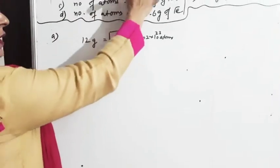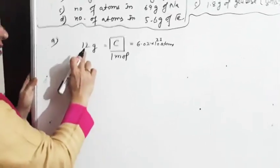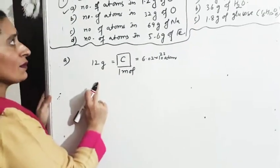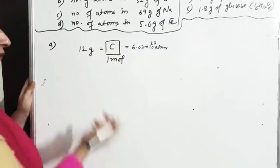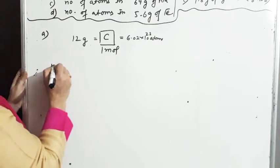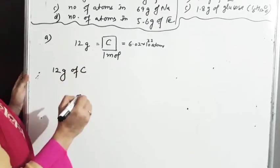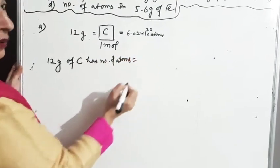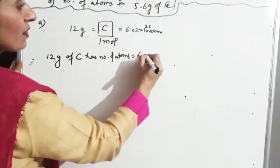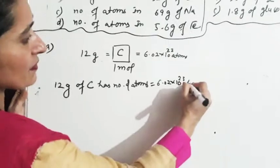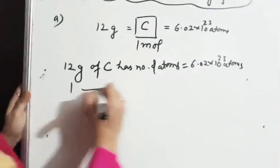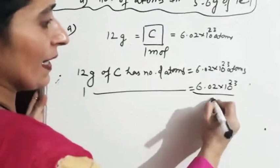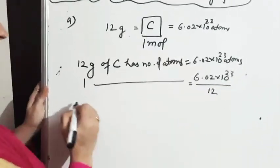अब उसने पूछा क्या — 1.2 gram के अंदर कितनी atoms हैं? आपको directly दिखाई दे रहा है: 12 gram के अंदर इतनी, 1 gram के अंदर कितनी होंगी, और 1.2 gram के अंदर कितनी होंगी? तो आप किस तरीके से लिखेंगे? 12 gram of carbon has number of atoms equal to Avogadro number, that is 6.02 × 10²³ atoms. अब 1 gram के अंदर कितनी होंगी? 6.02 × 10²³ divided by 12.